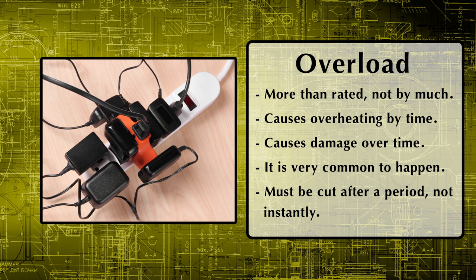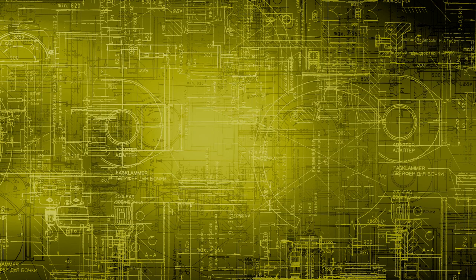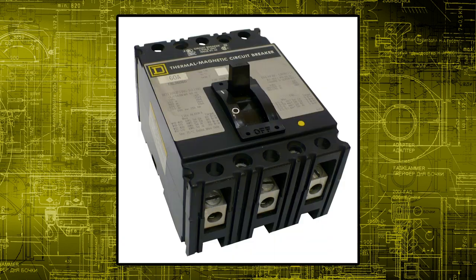The higher the overload current, the faster it should be removed. There are several electrical protection devices that deal with these types of faults, but we will discuss the thermal magnetic circuit breaker which can deal with both of them.